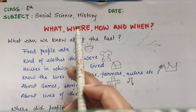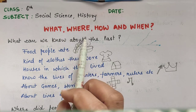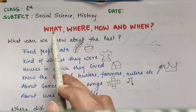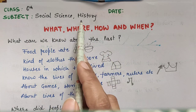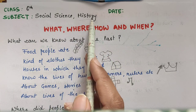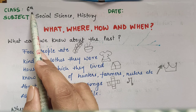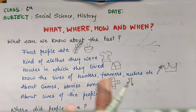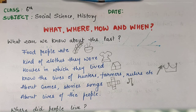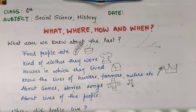Good morning all. Today we are going to study about what, where, how and when — our first chapter of history of 6th standard. So this is a basic review and brief of this chapter so that you can understand the chapter more accurately.